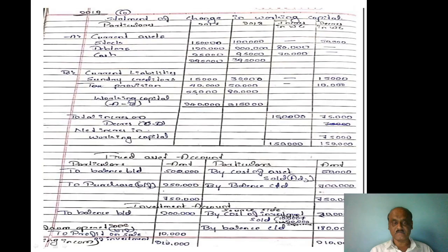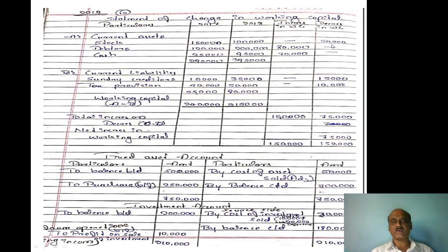First, changes in working capital. Current assets are available: stock is 1 lakh 50,000 and 1 lakh — decrease in current assets in working capital. Debtors are 1 lakh 20,000 and 2 lakh — current assets increase in working capital is 80,000. Cash is 25,000 and 95,000 — current assets increase in working capital. Total current assets are 2,95,000 and 3,95,000.